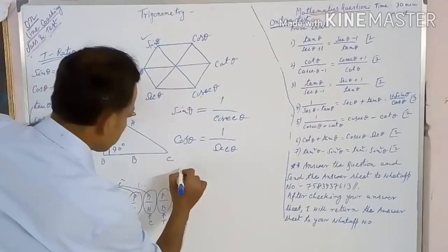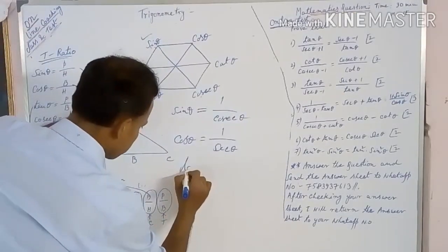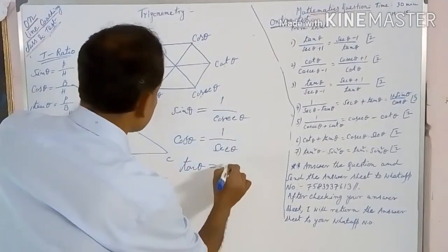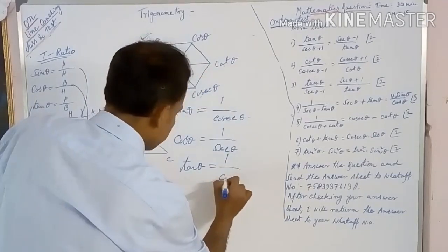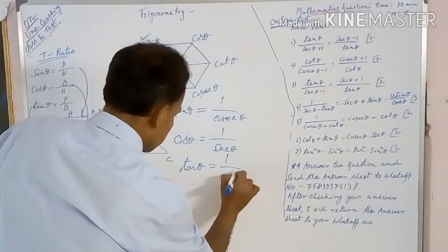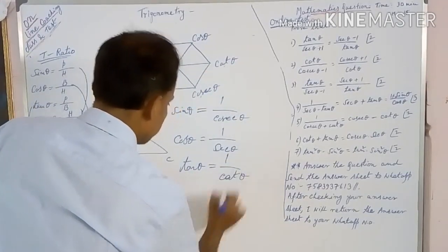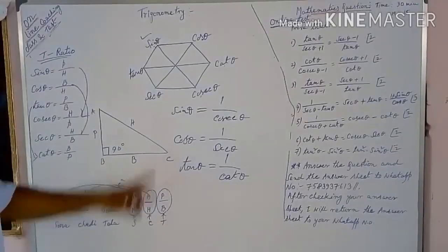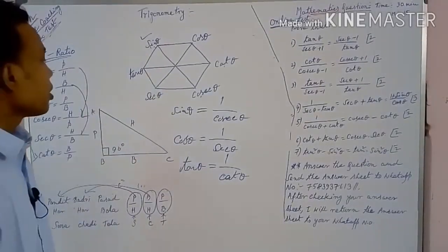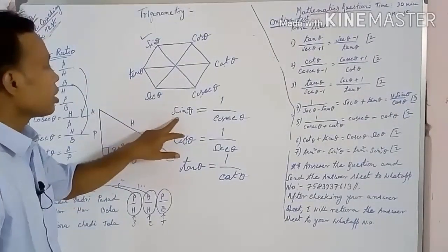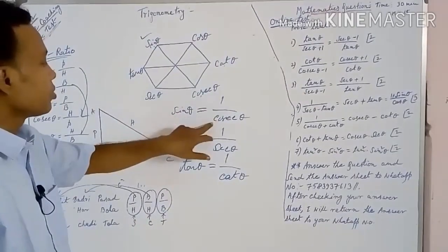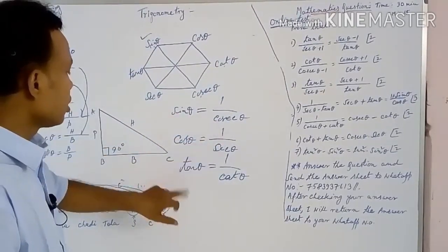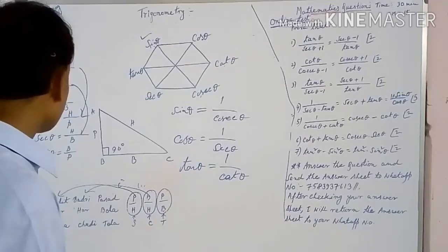Similarly, tan theta is equal to one by cot theta. So using the regular hexagon, you can easily find out the reciprocal formulas: sin theta is equal to one by cosec theta, cos theta is equal to one by sec theta, and tan theta is equal to one by cot theta.